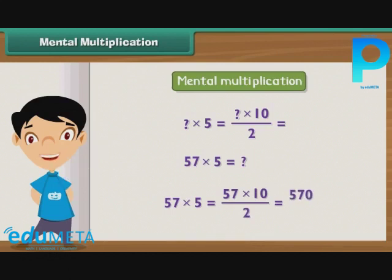Now divide 570 by 2 to get 285 as the result — demonstrating how to multiply a number by 5 by first multiplying by 10 and then dividing by 2.